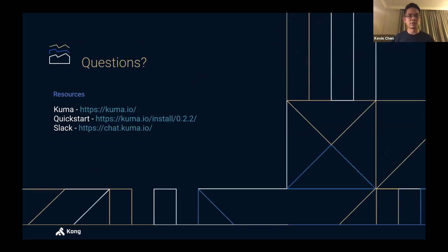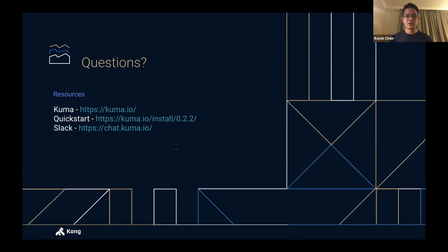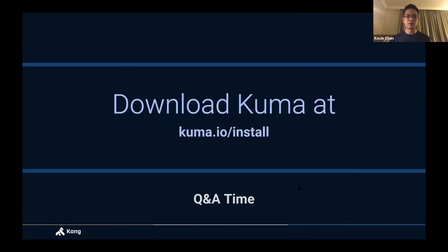These are the resources we have. kuma.io is our main web page where you can get a quick start. You can also join our Slack channel at chat.kuma.io. Download Kuma, go to kuma.io, install it, run it, and let us know what you think. Thank you.